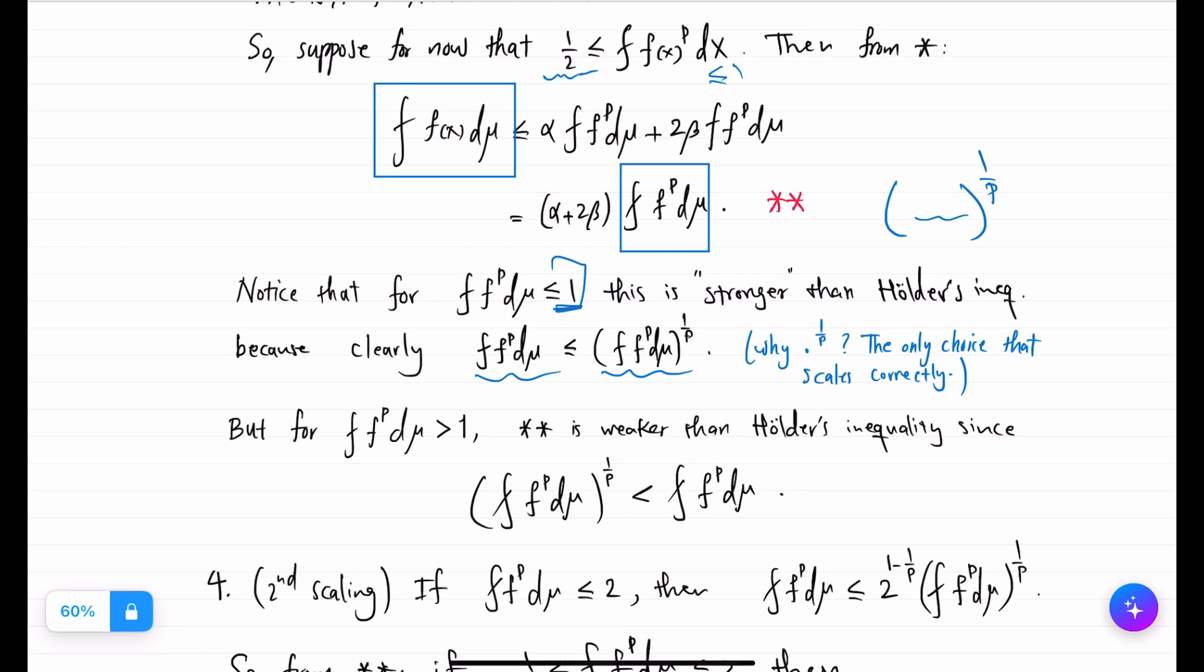Of course, Hölder's inequality ultimately gives this version. But remember we are trying to prove Hölder's inequality. The problem with double star and the reason we are not too satisfied with it is that if you are dealing with average integral bigger than 1, then raising to 1 over p will make it way smaller.